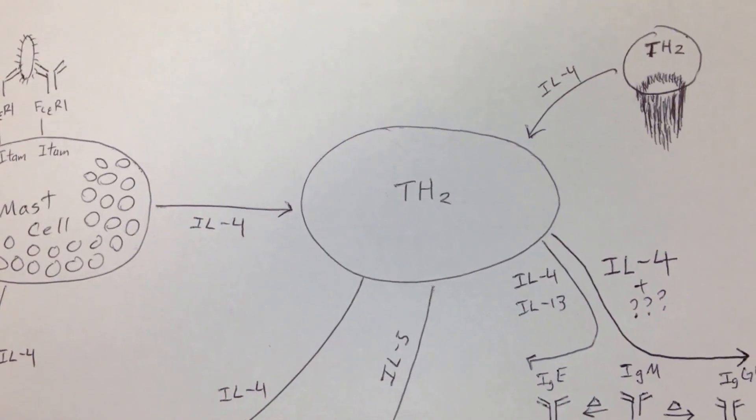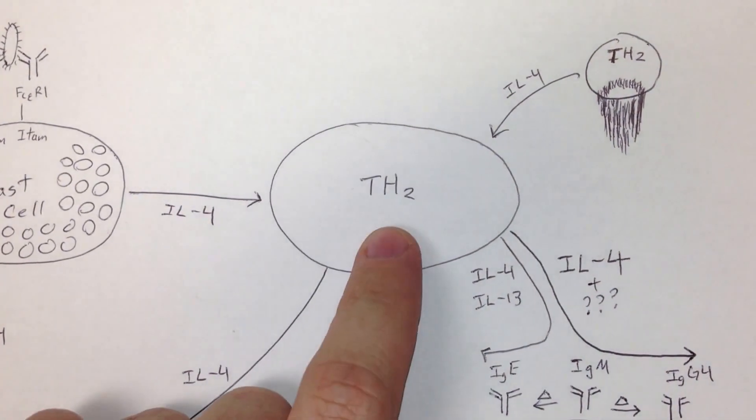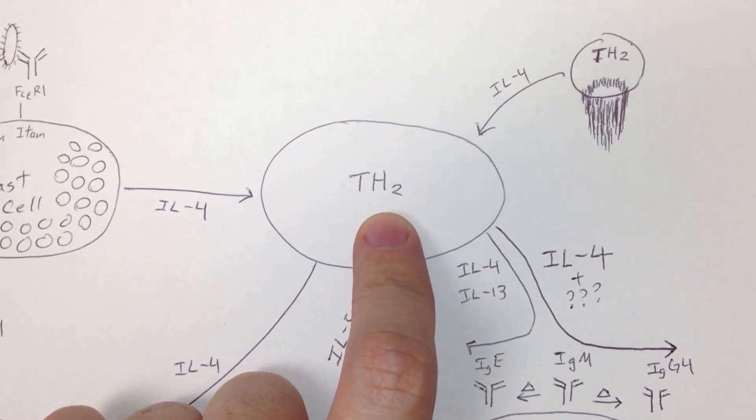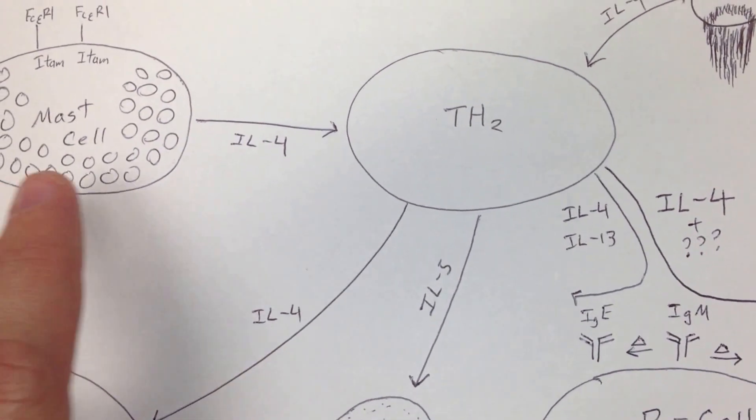Also, that IL-4 can come over here to a T cell and it can tell an undifferentiated naive T cell to become a T helper 2 cell.